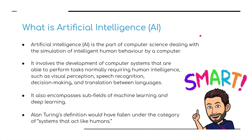So what is Artificial Intelligence, also known as AI? Artificial Intelligence is part of computer science dealing with the simulation of intelligent human behaviour by a computer. It involves the development of computer systems able to perform tasks normally requiring human intelligence, such as visual perception, speech recognition, decision-making, and translation between different languages. It also encompasses subfields of machine learning and deep learning. Alan Turing's definition would have fallen under the category of systems that act like humans.